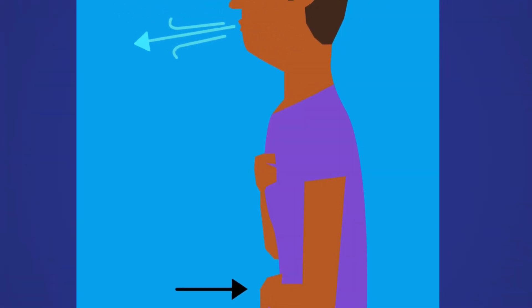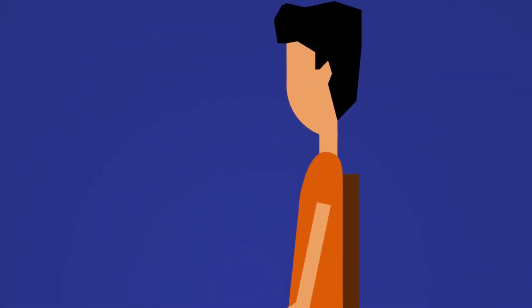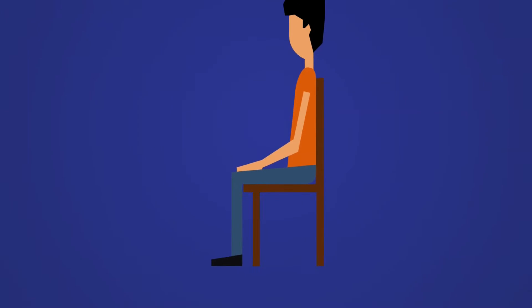Belly breathing is easy to do and very relaxing. Try this basic exercise any time you need to relax. Sit or lie flat in a comfortable position. Put one hand on your belly just below your ribs and the other hand on your chest.